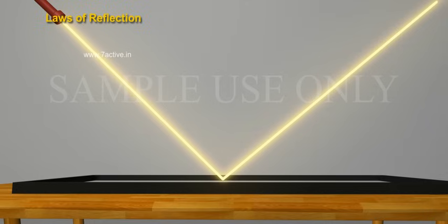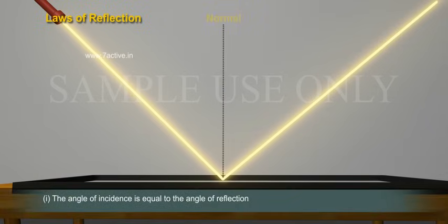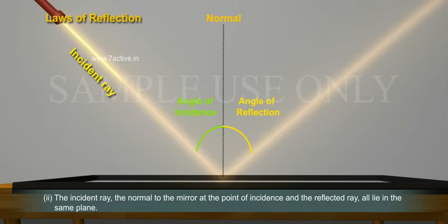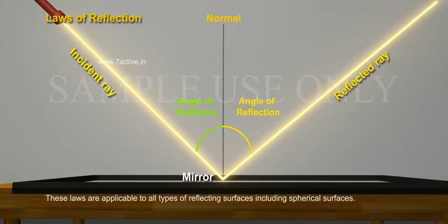Laws of Reflection: 1. The angle of incidence is equal to the angle of reflection and 2. The incident ray, normal to the mirror at the point of incidence and the reflected ray, all lie in the same plane. These laws are applicable to all types of reflecting surfaces, including spherical surfaces.